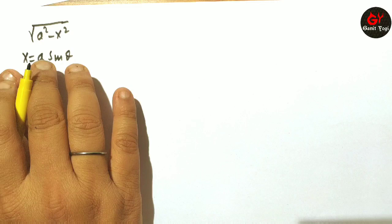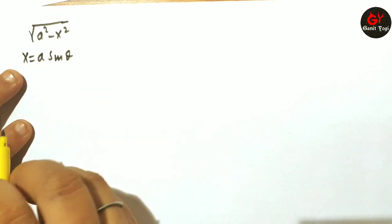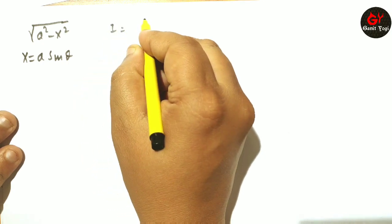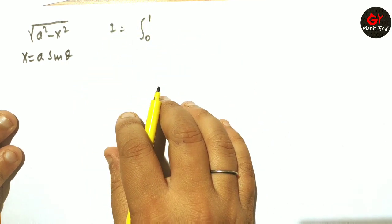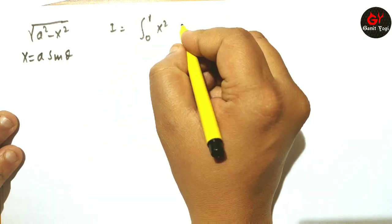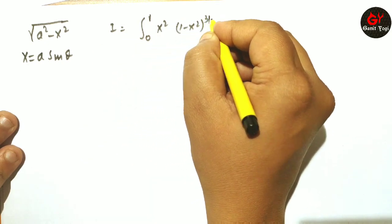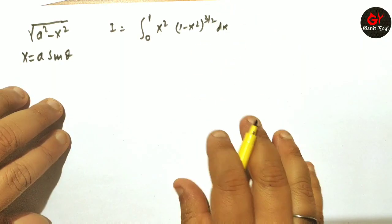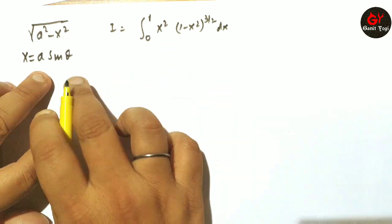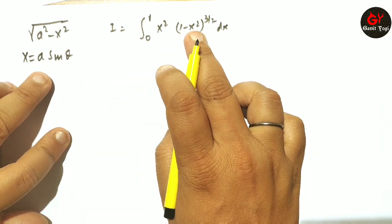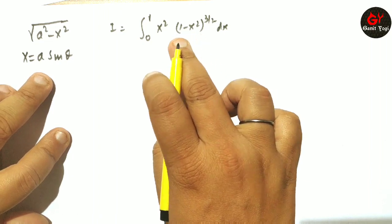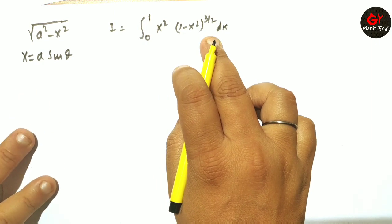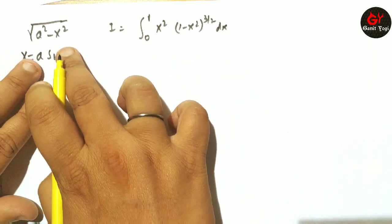We will look at one problem based on this. Let I equal to the definite integral from 0 to 1 of x²(1 - x²)^(3/2) dx. The format a² - x² is present here — you can separate it as (a² - x²) · √(a² - x²), so I can use this substitution.